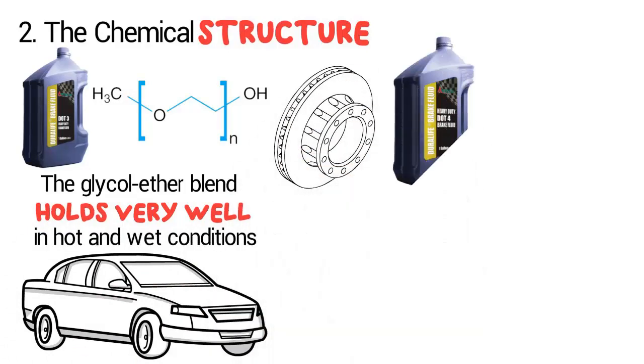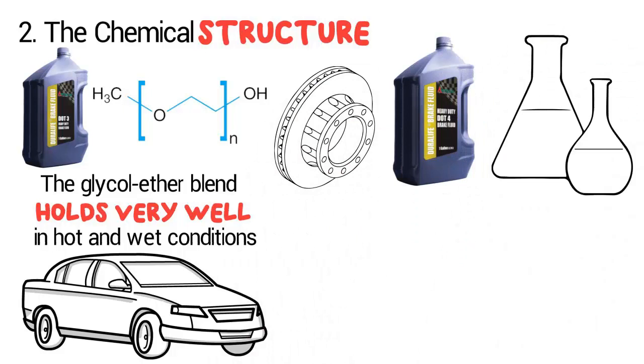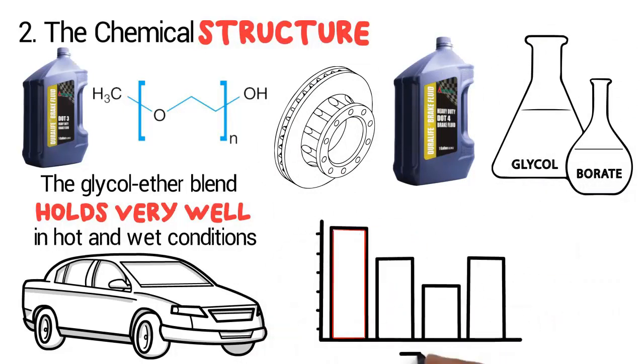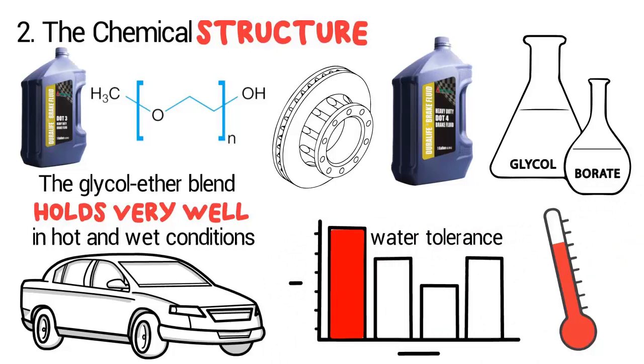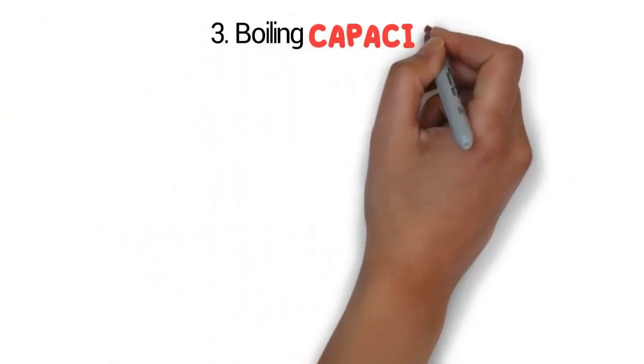DOT 4 chemical ingredients: a mixture of glycol and borate that show a high level of water tolerance and stability under high temperatures. Number three: boiling capacity.